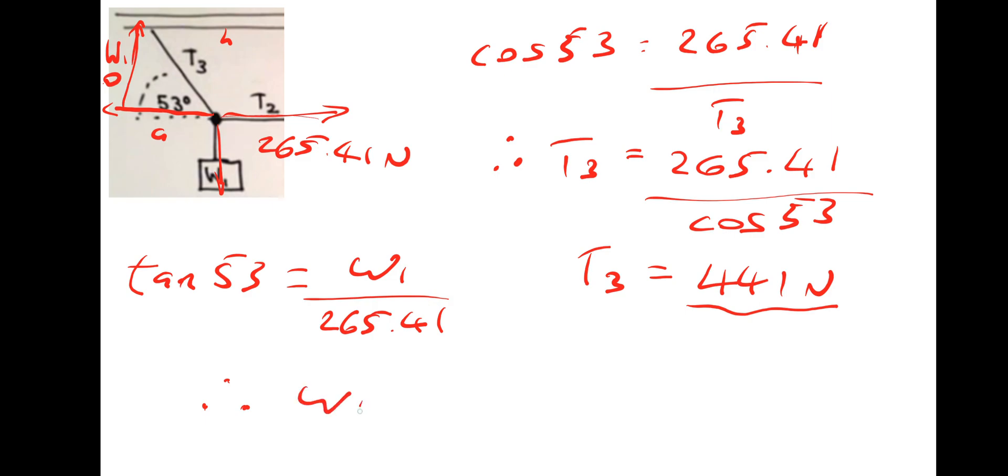Therefore weight 1 is equal to tan 53 multiplied by the 265.41 newtons. Therefore W1 is 352 newtons.